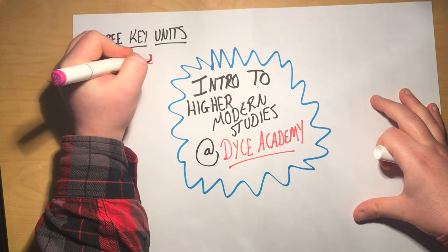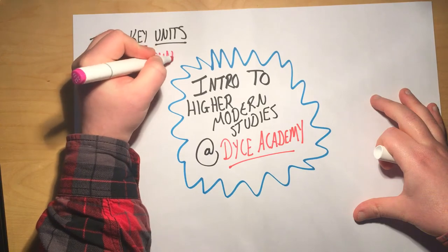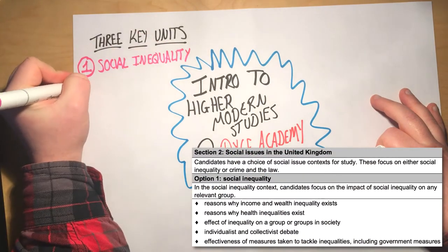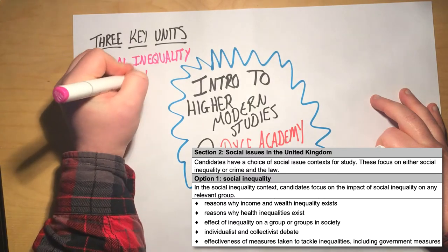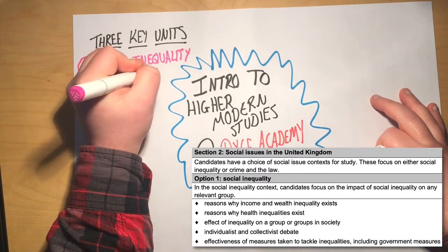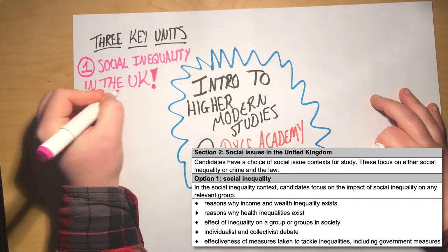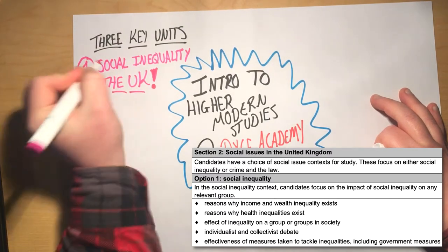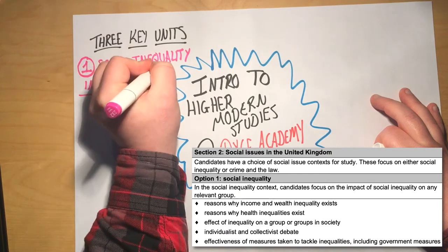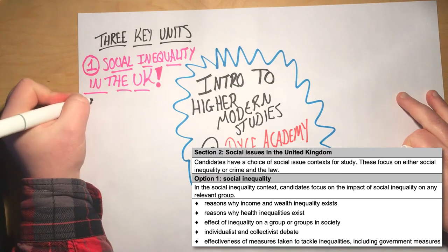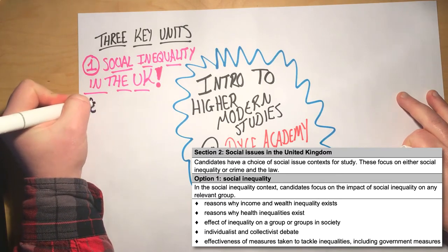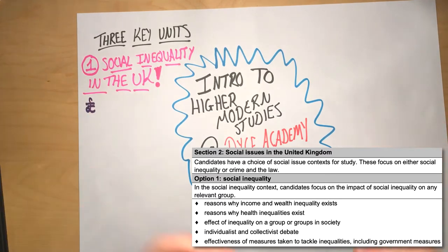This is our social issues in the UK unit. We look at lots of things in this unit. We look at why some people in the UK and in Scotland are richer than others, why some people are poorer, and what are some of the causes behind these inequalities when it comes to poverty, how geography plays a part, how education plays a part, how lots of different factors play a part in how much money somebody has. So that's wealth inequalities.